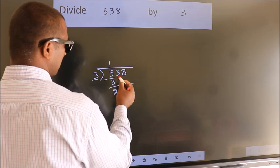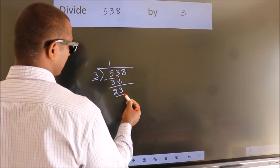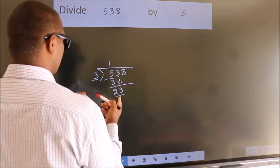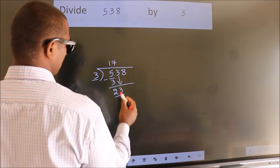After this, bring down the beside number. So 3 down. So 23. A number close to 23 in 3 table is 3 7s 21.